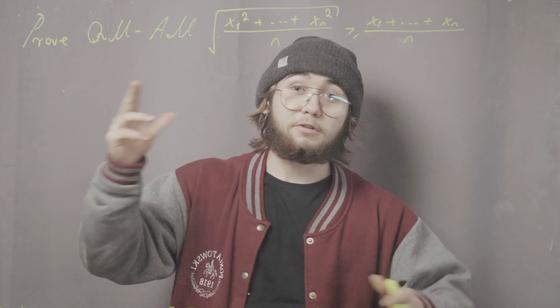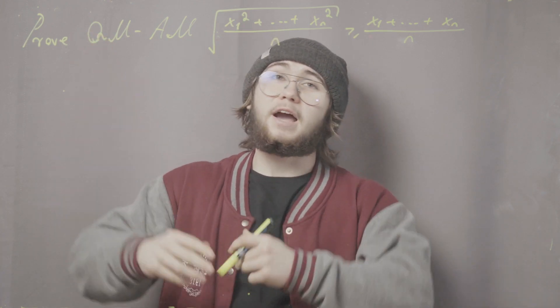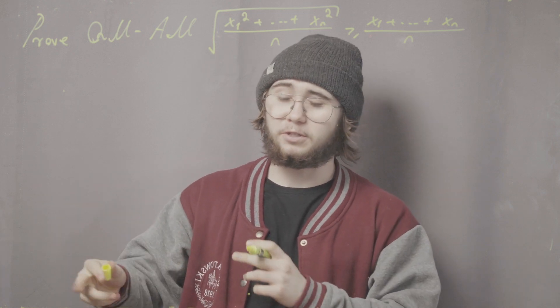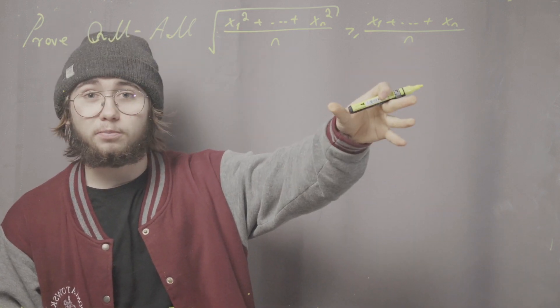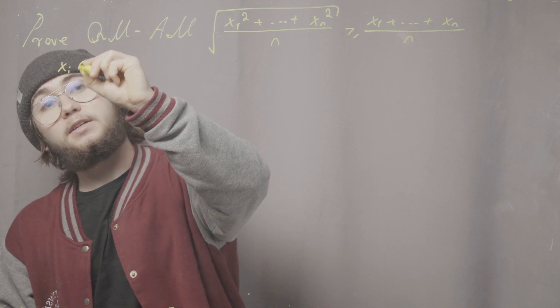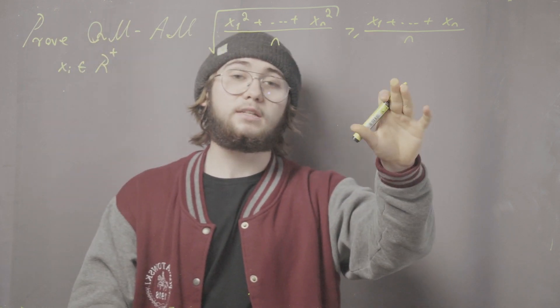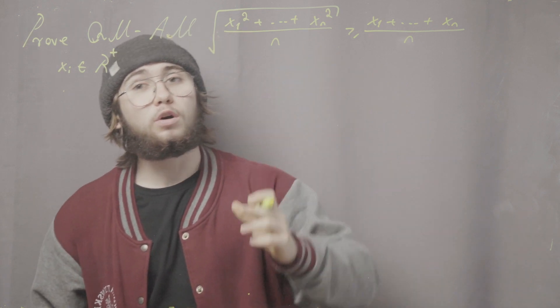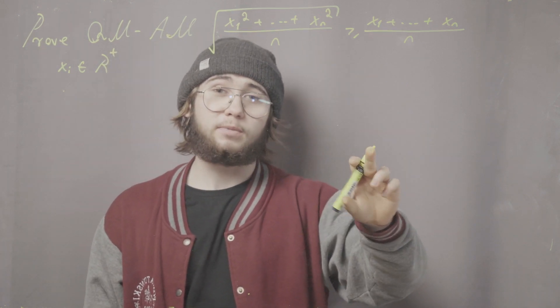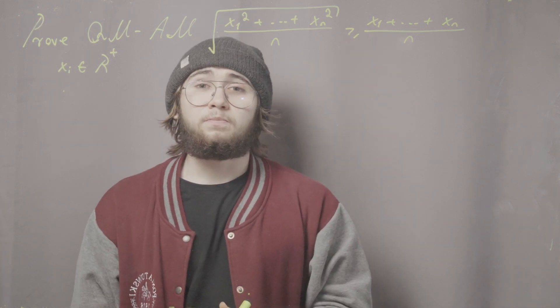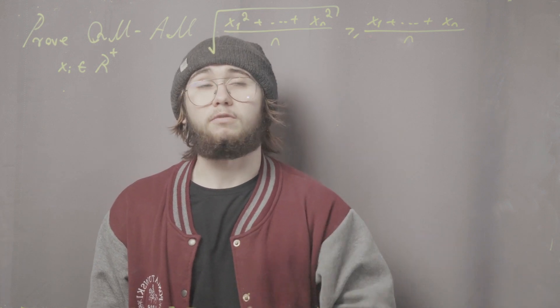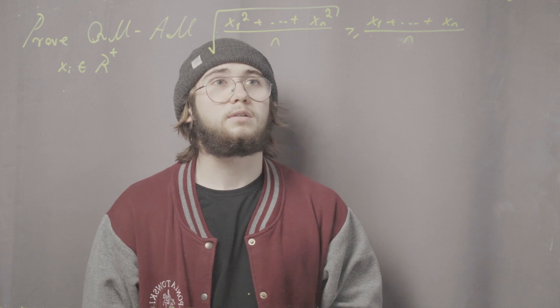Let's move to some problems. The first problem is the proof of the QM-AM inequality. We are supposed to prove that for positive reals xᵢ, the quadratic mean √(Σxᵢ²/n) is greater than or equal to the arithmetic mean (Σxᵢ)/n.